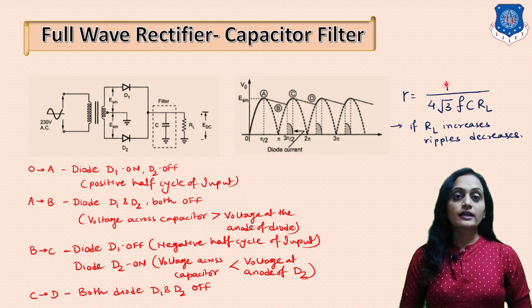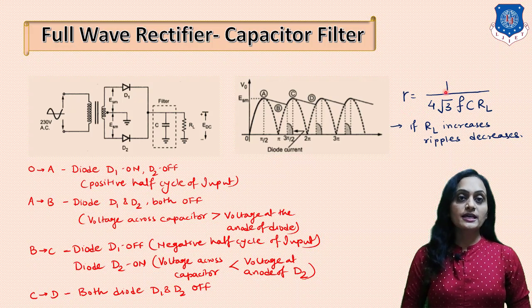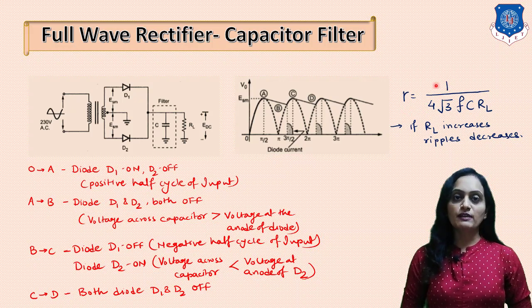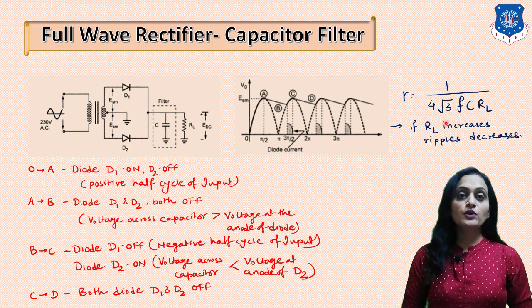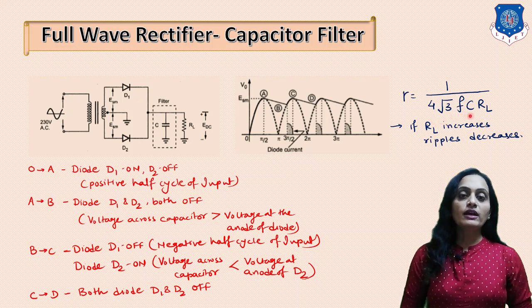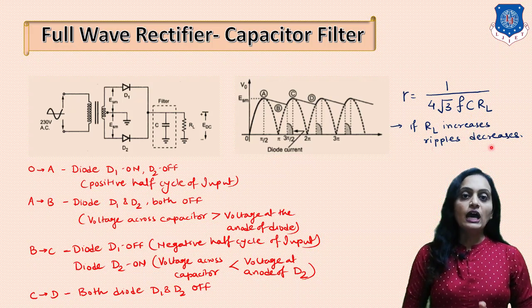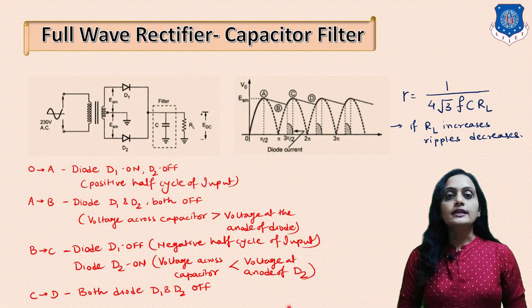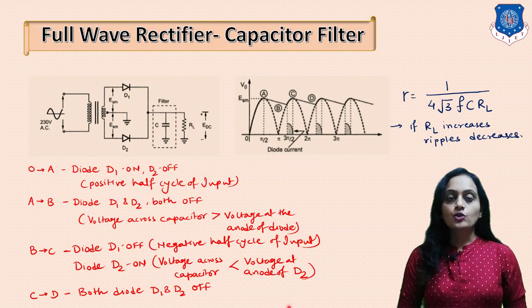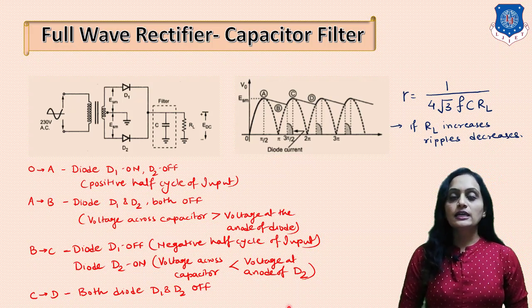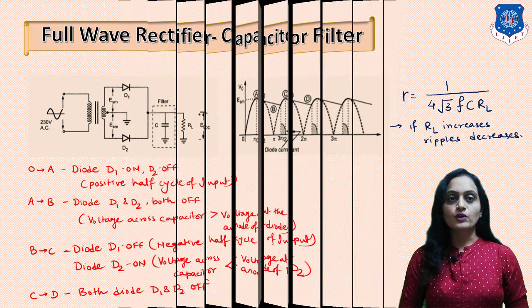If we calculate the ripple factor for the capacitor filter for the full wave rectifier, the equation for the ripple factor equals 1 divided by 4√3 · FC · RL. If RL increases, then the ripple decreases. So if the load value is very high, the ripple can be reduced for the capacitor filter.